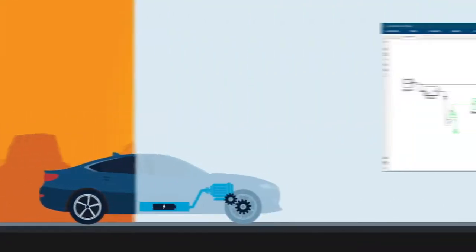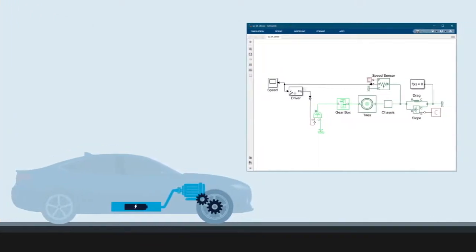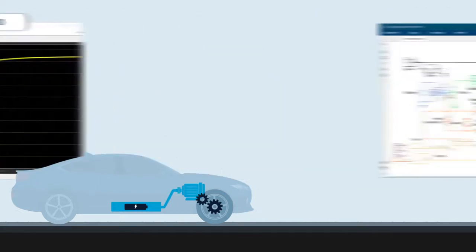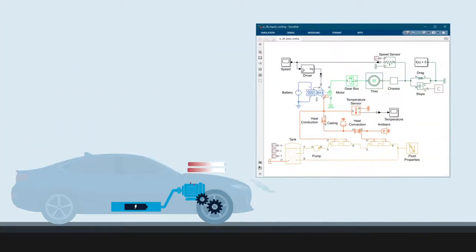First, we'll use Simscape to model the mechanical system. Next, we'll explore simulation results to refine the requirements for the motor. Then, we'll account for its thermal behavior and determine the amount of cooling needed. Let's get started!